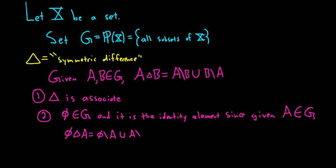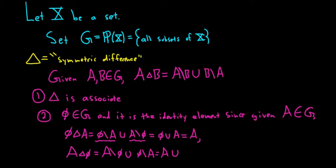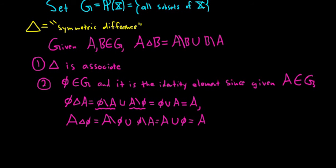A set minus the empty set, so this piece here is just the empty set, this piece here is just A, and when you union the empty set and A you just get A. Likewise if you do A symmetric difference empty set, that's equal to A set minus the empty set union the empty set set minus A. So everything in A but not in the empty set, that's just A, and then union empty set, so you get A. So the empty set is the identity element in this group, in this set that will be a group.